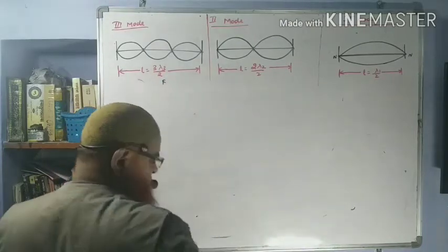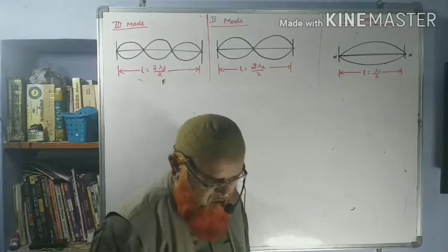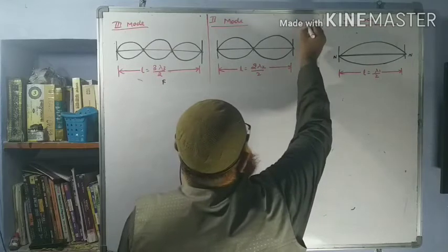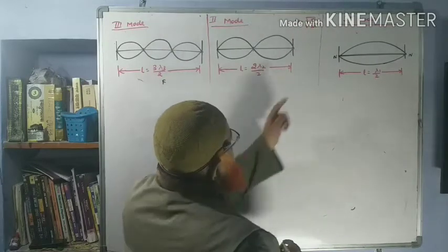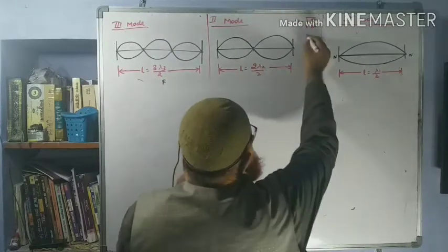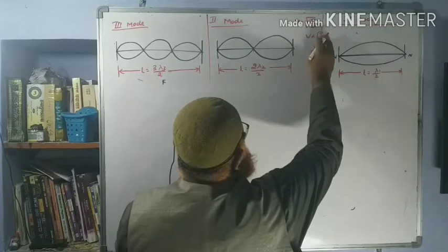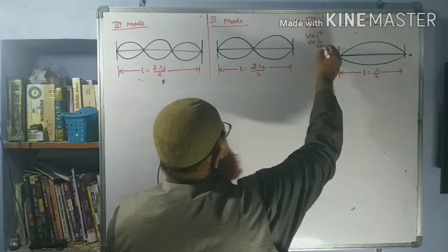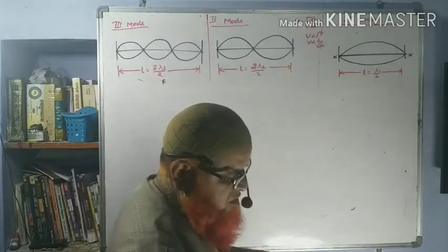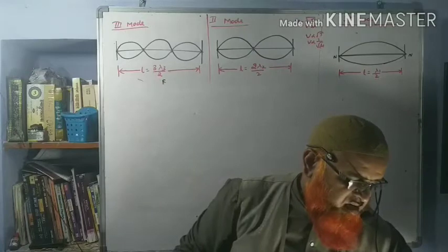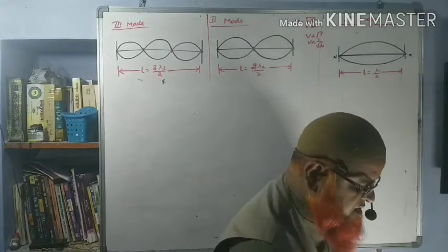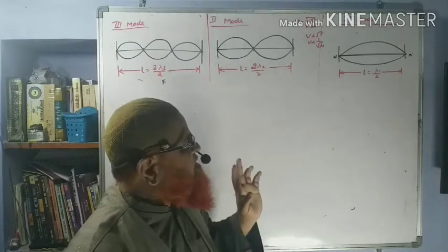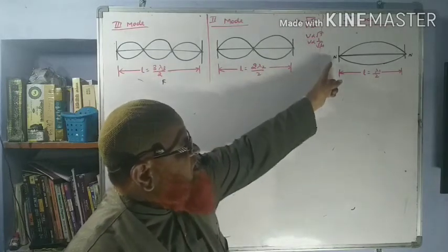From this derivation, the speed of the wave in a stretched string is V equals root of T by μ. From this, V is directly proportional to the square root of tension and inversely proportional to the square root of linear density μ. So if tension increases, speed increases; if density increases, speed decreases.